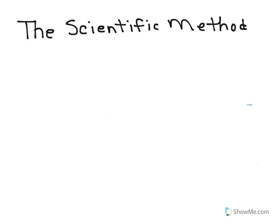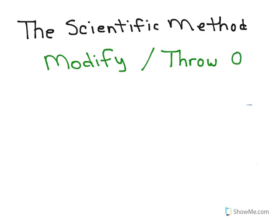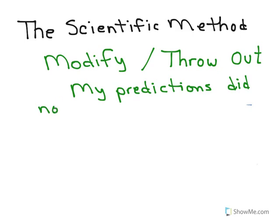So because my prediction didn't come true, I am going to modify. Now I have a choice. I could either modify the hypothesis, or I could modify the experiment, or I could completely throw out my original idea. So in this case I am going to modify. Now I think my hypothesis was correct, but I think my experiment was flawed. So because my predictions did not come true, I did not get pictures of planets, I am going to try something different.